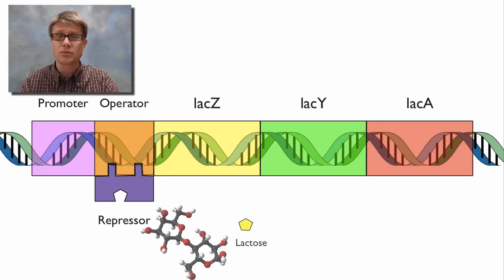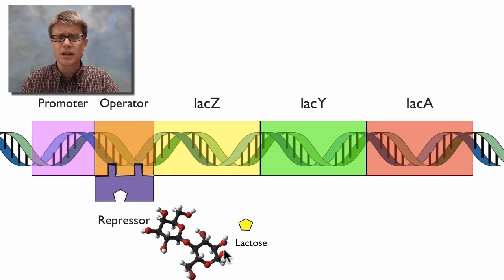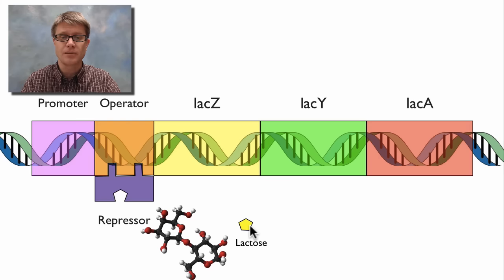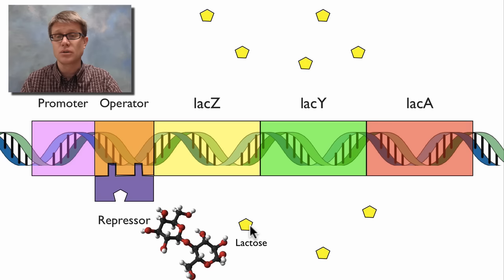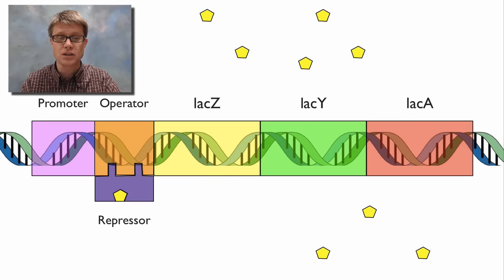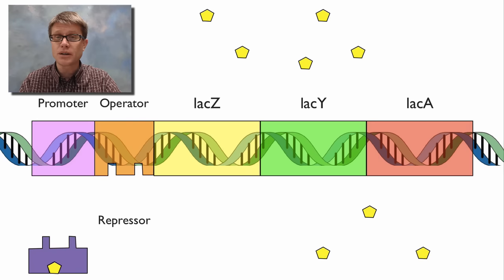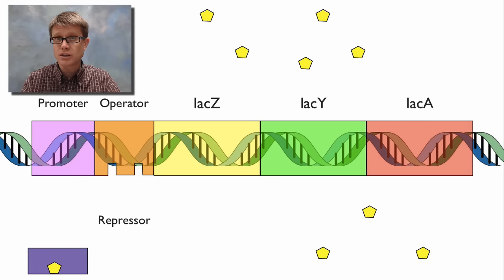We're trying to break down — or deal with — lactose. Lactose is a disaccharide; in this model we represent it as a little yellow pentagon. All of a sudden a lot of lactose is present. What is the lac operon going to do? All of this lactose is moving around, and eventually one of the molecules is going to bump into the repressor. As it bumps into the repressor, it's going to change the shape of that repressor.